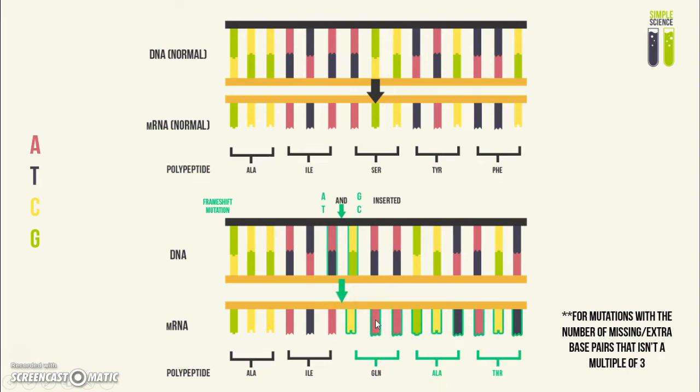However, the frameshift mutation only occurs when the number of bases that are missing or that are in excess are not in multiples of three, because codons occur in groups of threes. If you have like three of them missing or three of them added, then you just have an extra amino acid or a missing amino acid, as opposed to having every single amino acid downstream being changed.